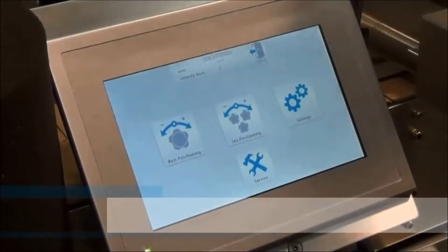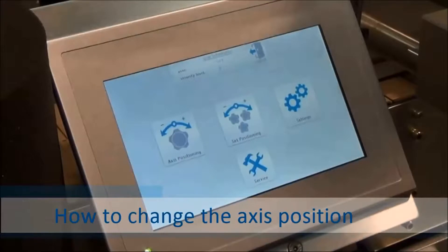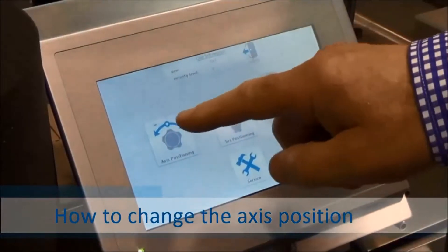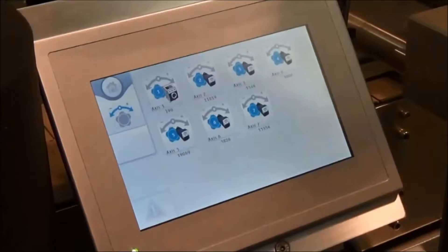To change the axis position by the HMI, at the home screen press axis positioning. In this case we will select axis 4.